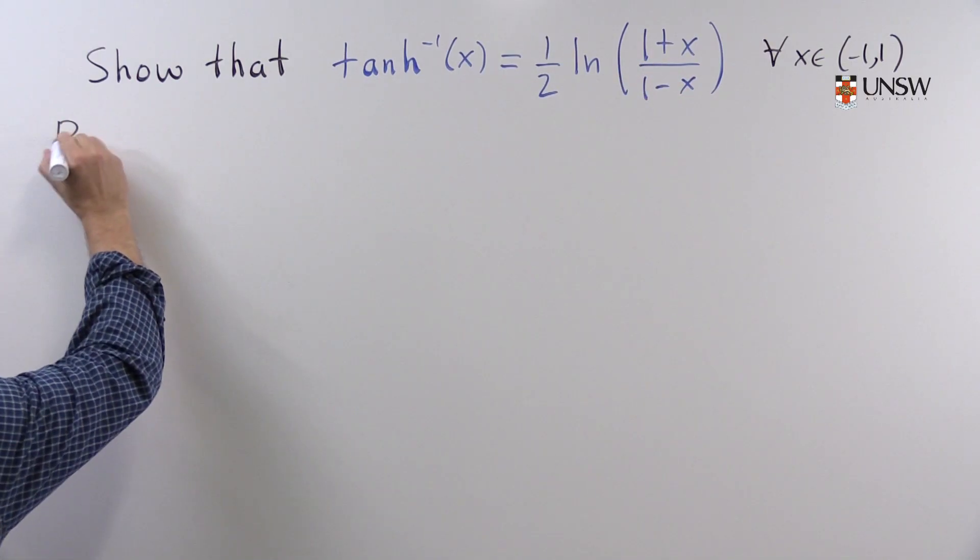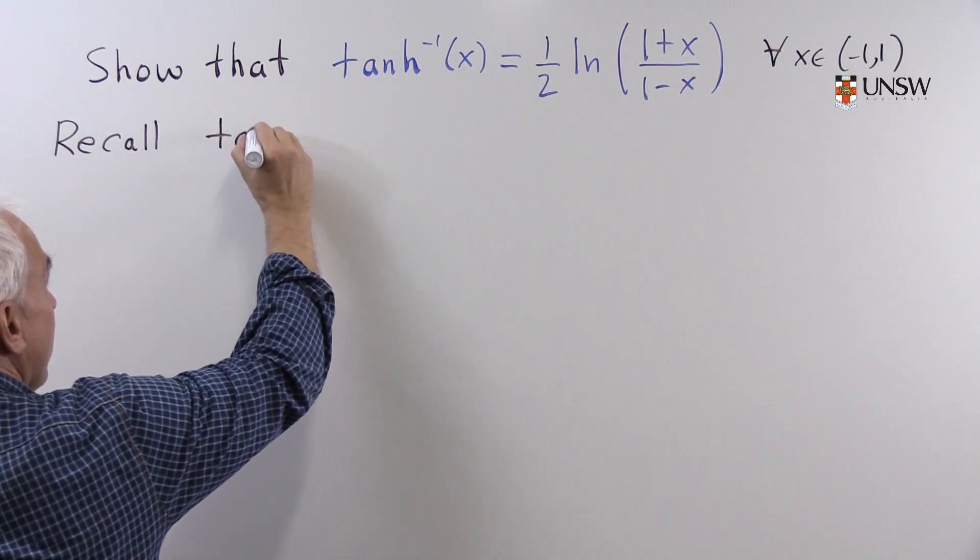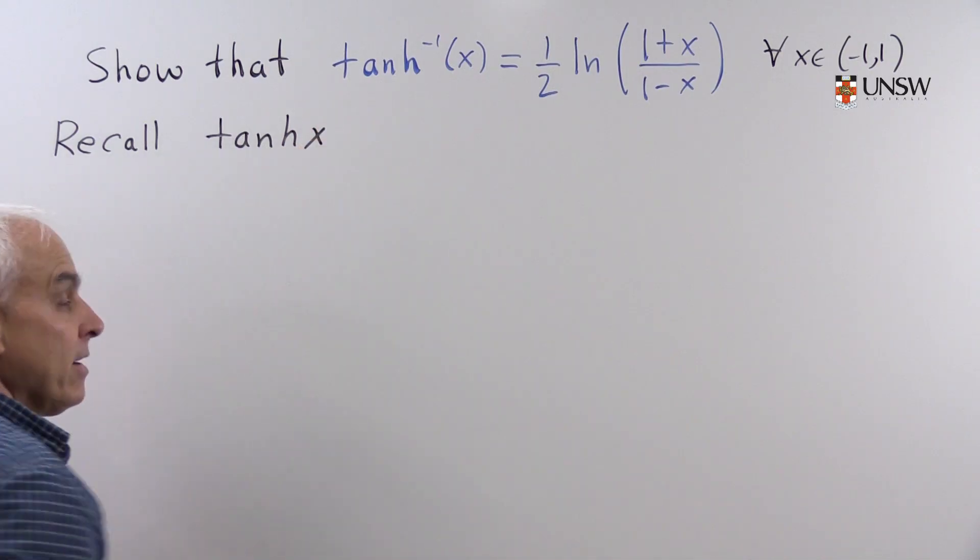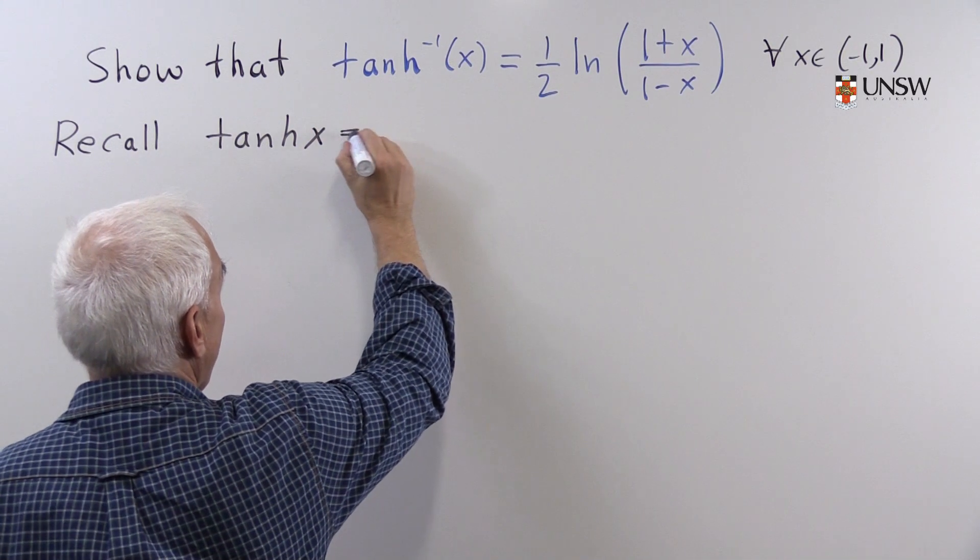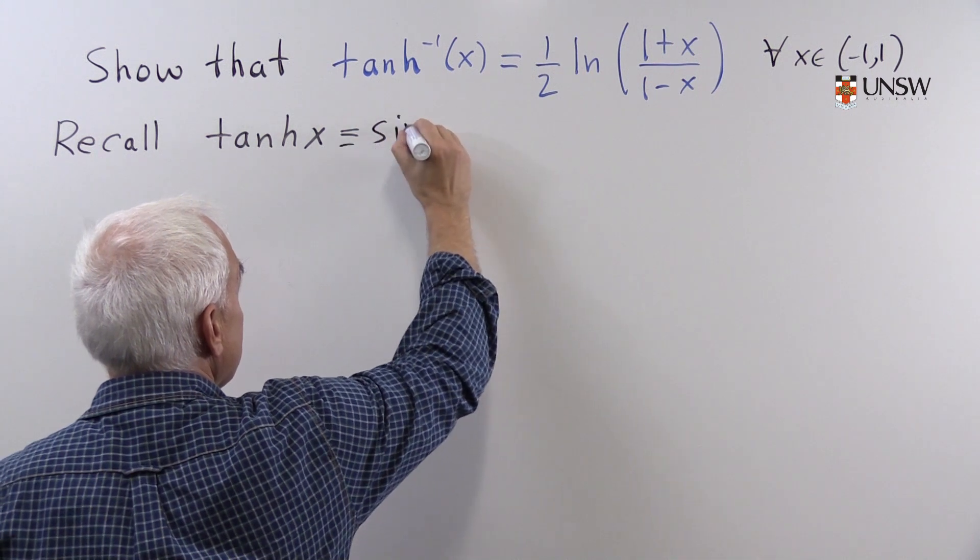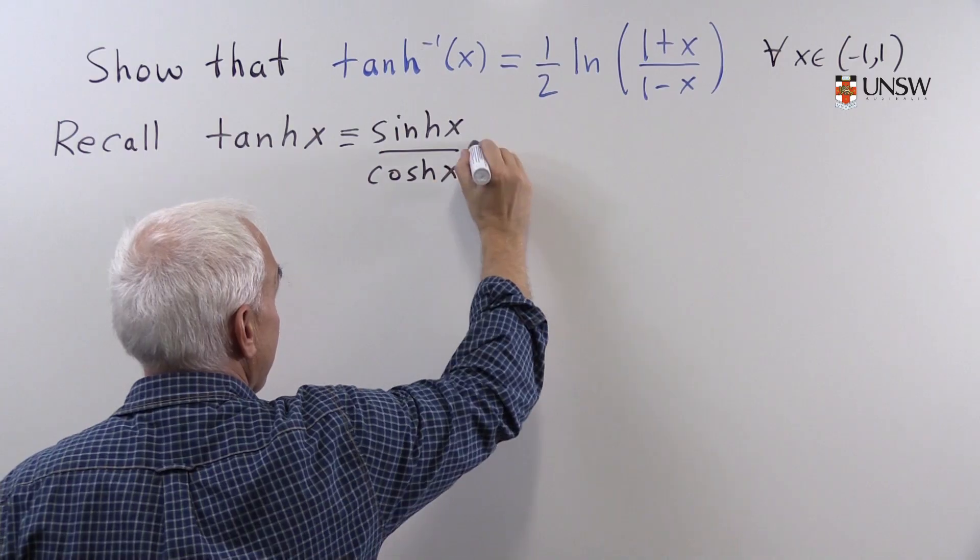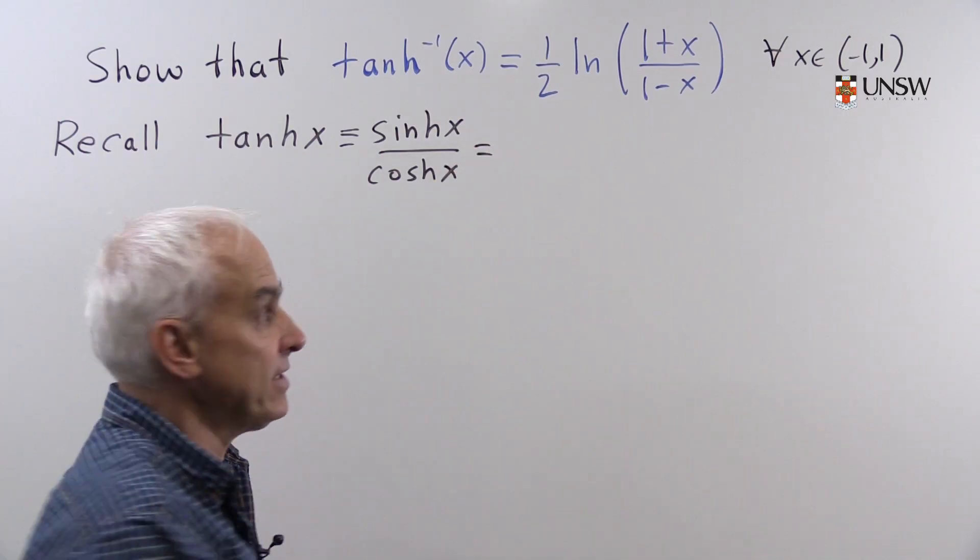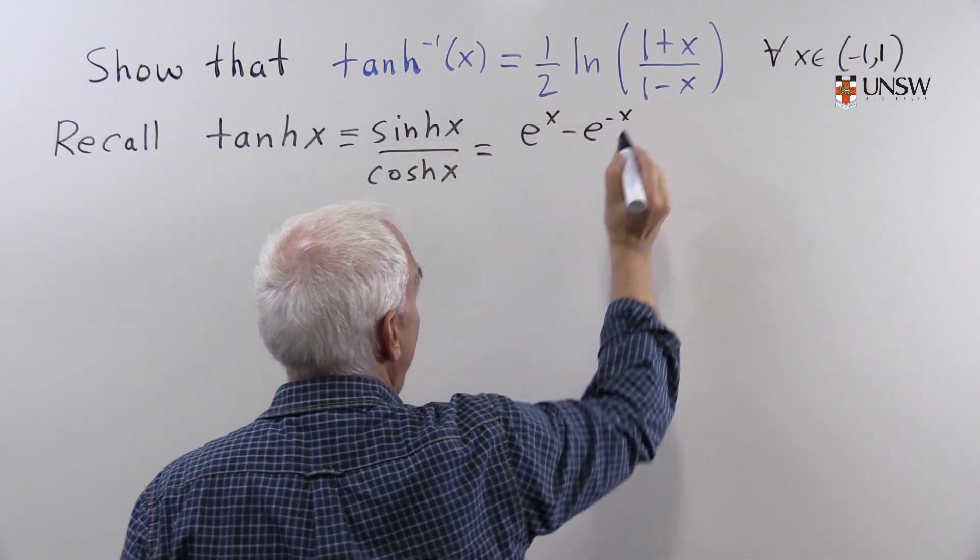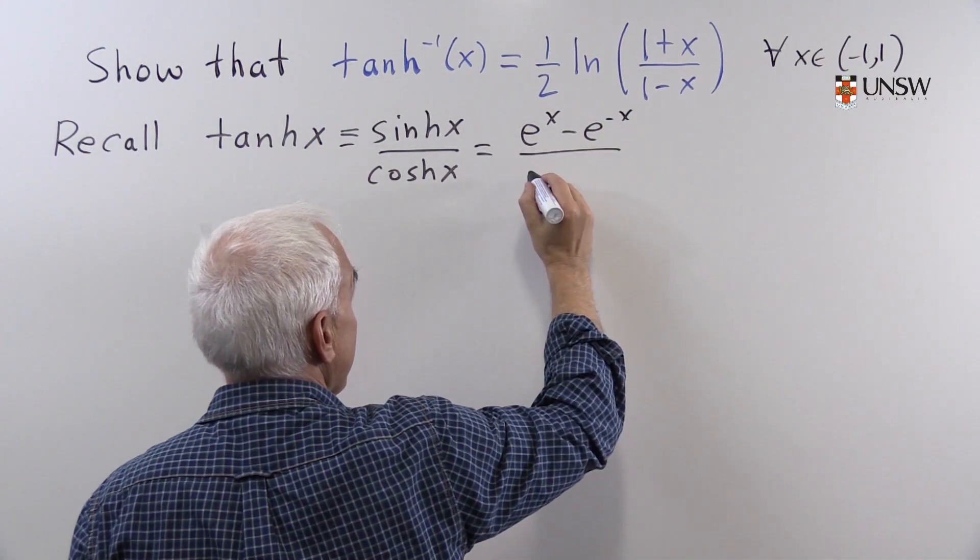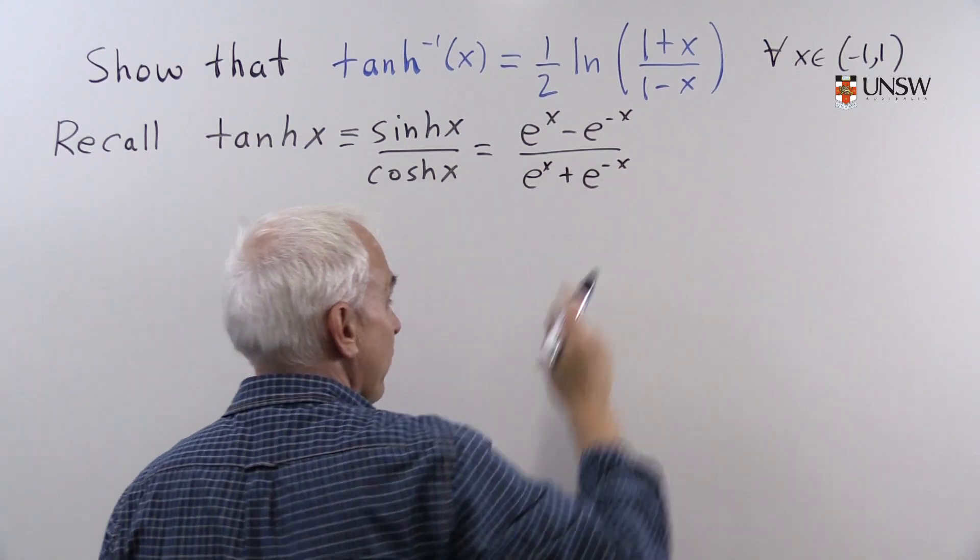Let's start by recalling the definition of the ordinary hyperbolic tangent function. Tanh x equals, by definition, sinh x over cosh x. And sinh x is e to the x minus e to the minus x over 2. And cosh x is e to the x plus e to the minus x over 2.